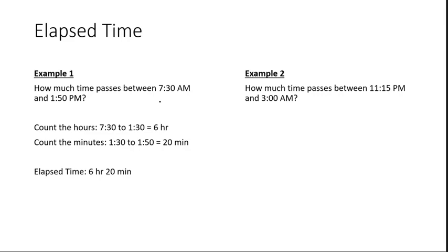Again, you begin by counting the hours. From 11:15, we try to get as close as we can to 3 without going over. So 11:15 to 12:15 is one hour, 12:15 to 1:15 is two hours, and 1:15 to 2:15 is three hours. Three hours takes you to 2:15. Four hours would take you past 3 o'clock to 3:15, so we stop at three hours.